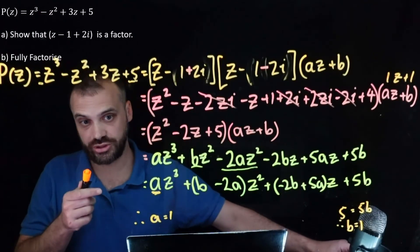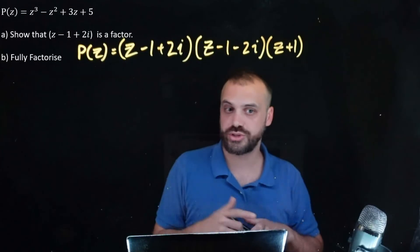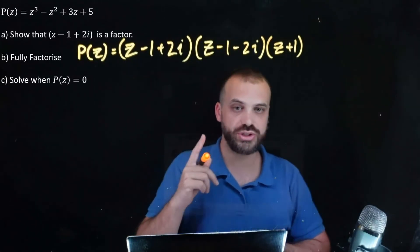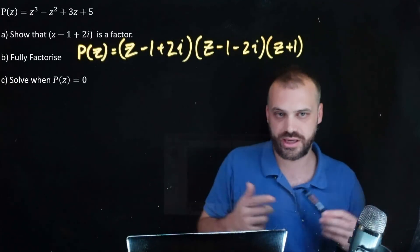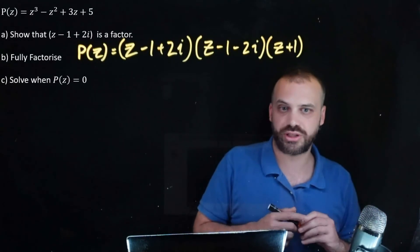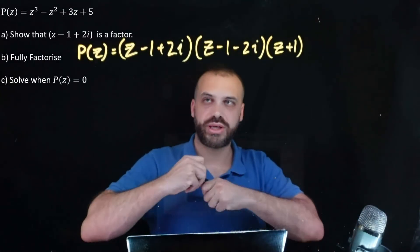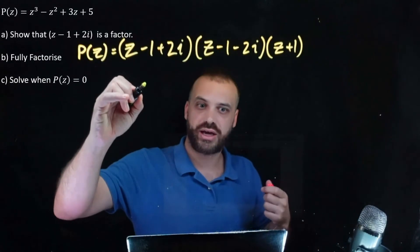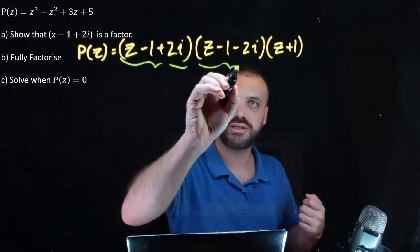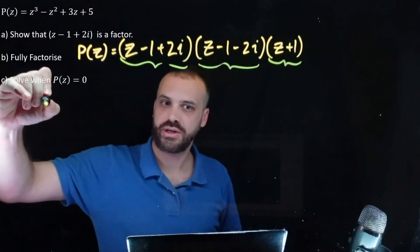That brings us to the last question: solve when P(z) equals 0. Once you've factorized something, solving it is really simple — it's just the null factor law. Each factor must equal 0.